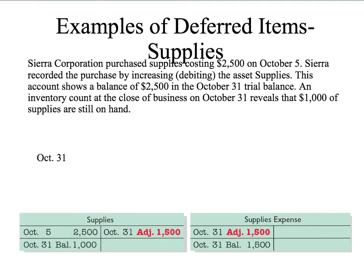Now if it was prepaid rent, it would be exactly the same thing. It would be rent expense debit, and credit prepaid rent. Those two are very similar — prepaid insurance and prepaid rent.